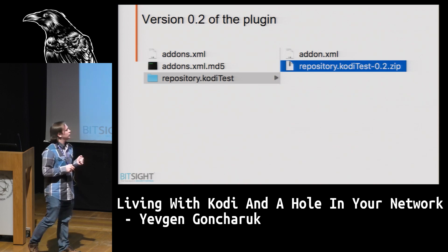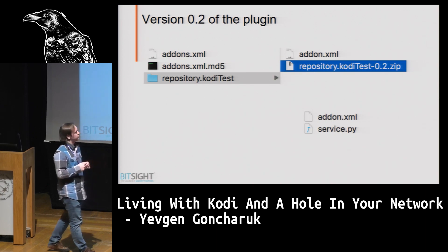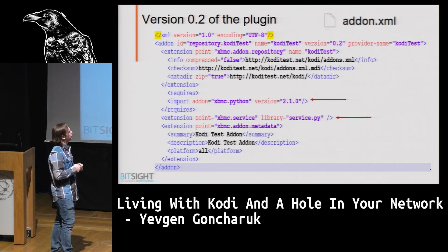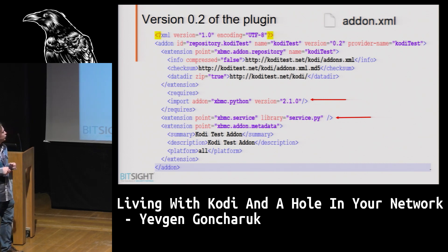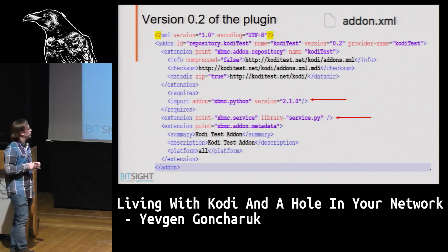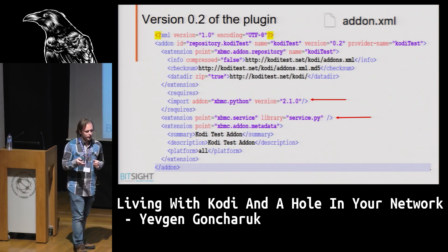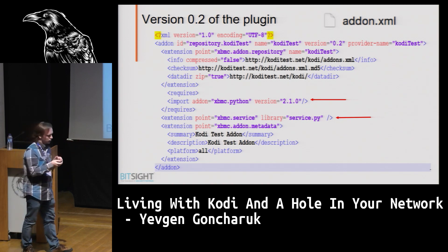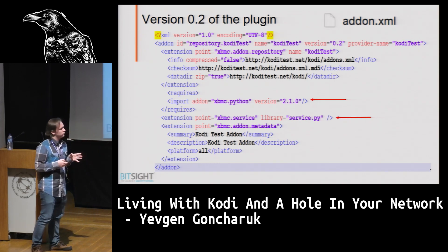In the zip we have two files: addon.xml and service.py — the Python code. For me it's just some basic code. The difference here is that in addon.xml I'll be adding some Python code. I'll be importing the Python module and starting a service called service.py when MyPlugin is run. It's just these two lines that make the difference. So some malicious guy finds the code, adds two of these lines, and he can be executing Python code.